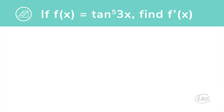If f(x) equals tangent of 3x to the fifth power, find the derivative. First, rewrite f(x) to show that the entire trigonometric function, tangent of 3x, is raised to the power of 5. Use the chain rule to work from the outside in. We'll address the exponent first by using the power rule. Take the exponent and make it the coefficient. Now, subtract one from the original exponent to get the new exponent. That gives us 5 times tangent of 3x to the fourth power. Next, take the derivative of the trigonometric function. According to the power rule, we multiply the derivative of the outer function by the derivative of the inner function.